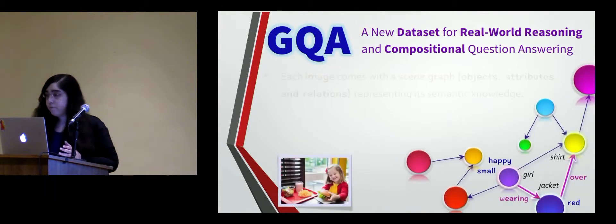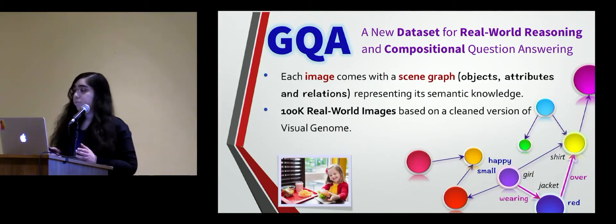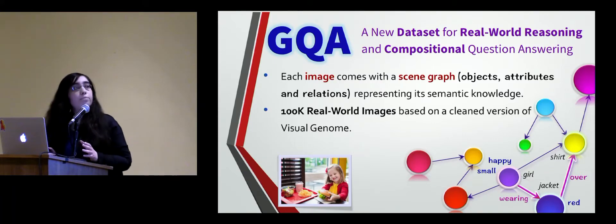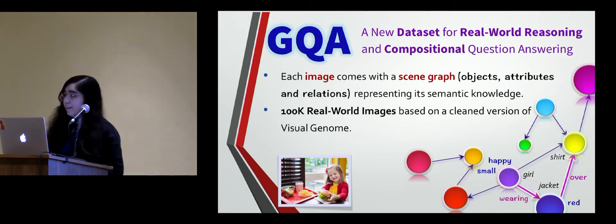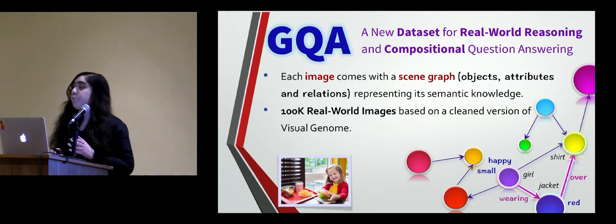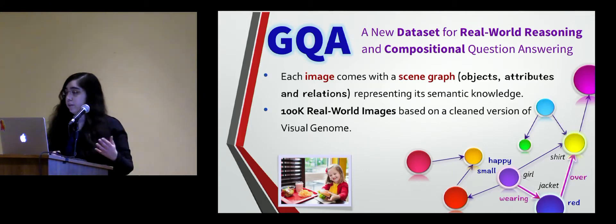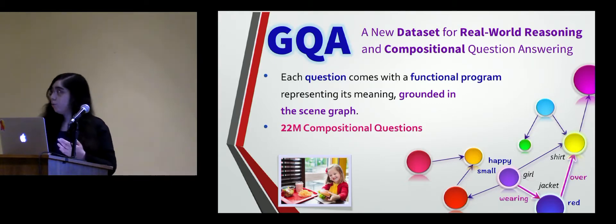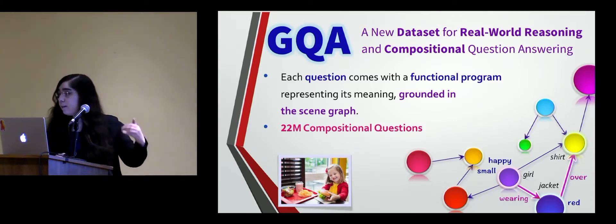Motivated to address these problems, we recently released GQA, a new dataset for real-world visual reasoning and compositional question answering. Notably, in our dataset, in contrast to prior work, everything is structured. Each image comes with a scene graph — a structural representation of the semantic knowledge in the image in the form of a graph — which specifies the objects, attributes, and relations in the scene, based on a clean version of Visual Genome. The questions also come with complementary structured representations in the form of functional programs that specify the series of steps needed to be performed over the scene graph in order to answer the question.